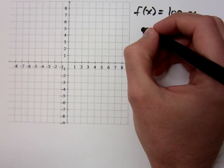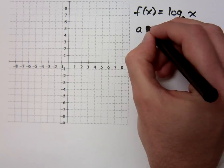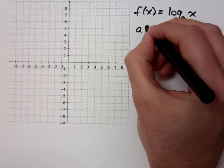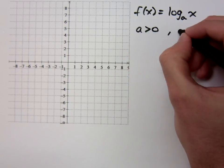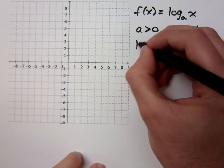It's the same restrictions as what we had on exponentials. A has to be greater than zero, but A cannot equal one, so make sure we understand that. And let me tell you what your key points are.